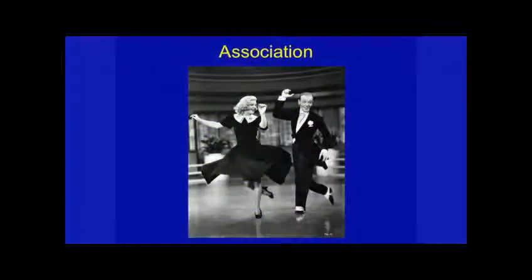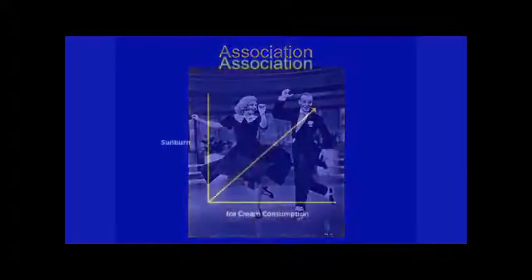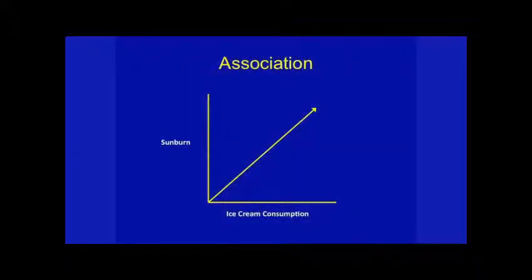So let's start by talking about association. What's association? Association is when you find things that are usually found together, like Fred and Ginger — where you see Fred, you often see Ginger. Here's an association: when more people are eating ice cream, more people are getting sunburned. So this graph tells us that as more people are eating ice cream, more people are getting sunburned. There's an association between ice cream consumption and sunburn.